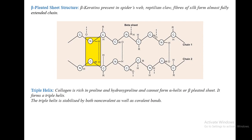The triple helix: collagen is very rich in proline and hydroxyproline and cannot form an alpha helix or beta-pleated sheet, so it forms a triple helix. The triple helix is stabilized by both covalent and non-covalent bonds, with inter-chain hydrogen bonds between different peptide chains that are almost perpendicular to the long axis. There are additional inter-chain cross-links and secondary amide bonds responsible for the triple helix. Many globular proteins have a mixed secondary structure of alpha helix, beta-pleated sheet, and non-helical non-pleated structures called random coils.